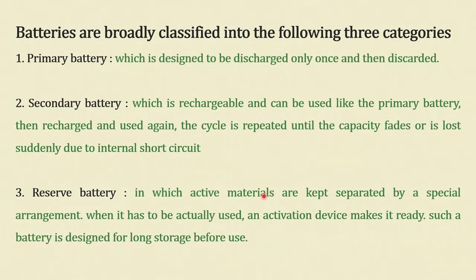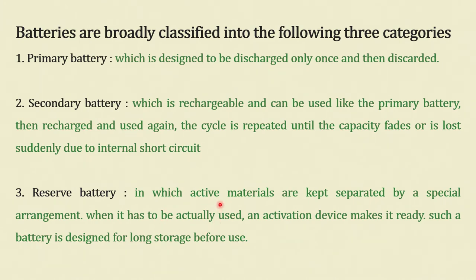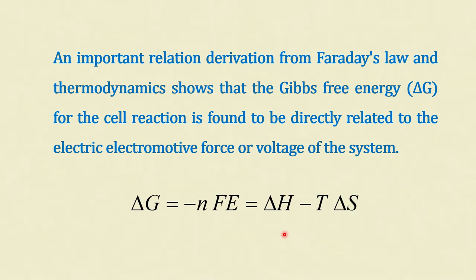Reserve batteries keep active materials separated by a special arrangement; only when needed is the active material released and the battery comes into operation. This is especially useful for space applications — you do not need the battery to start working the moment it leaves the earth's surface. Only when it is deployed in orbit do we want the batteries to activate. In such cases, the electrolyte and electrodes are sealed with a separator that is actuated by an activation device, and such batteries are stored for long periods before use.